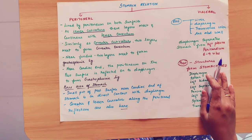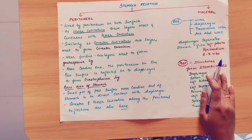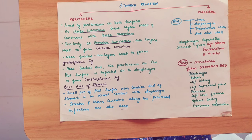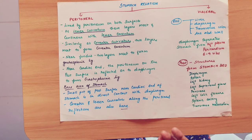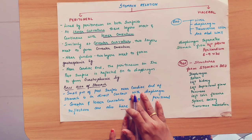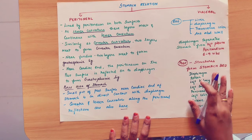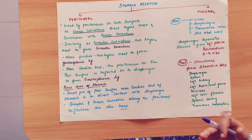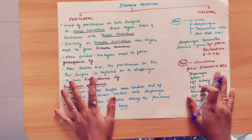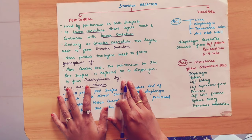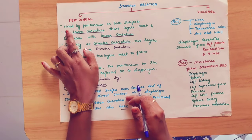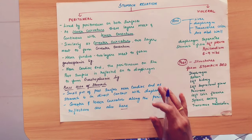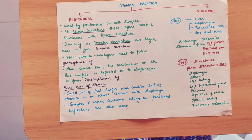Peritoneal relation is a visceral relation. Peritoneum is a serous membrane that is covering the abdominal cavity. Peritoneum is covered in the stomach — that is the visceral relation. It is lined by peritoneum on both surfaces: the anterior surface and posterior surface.